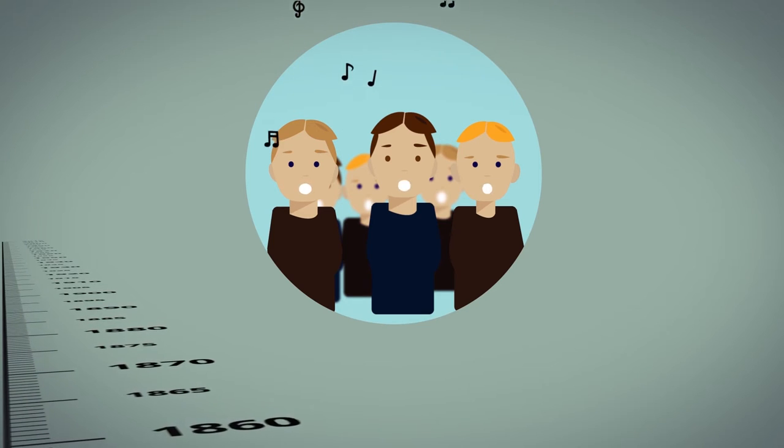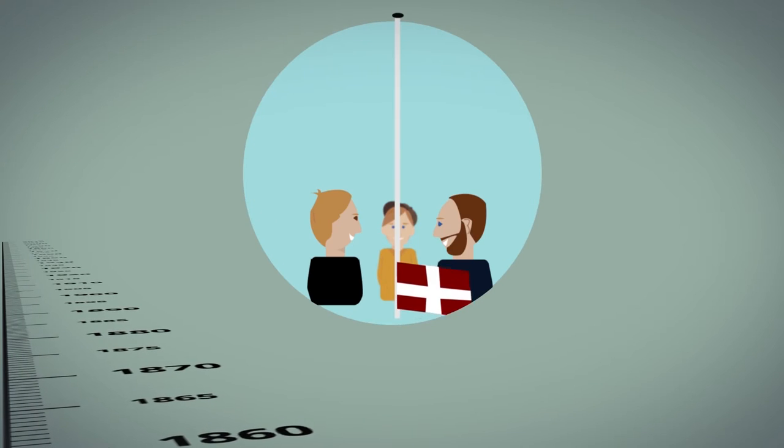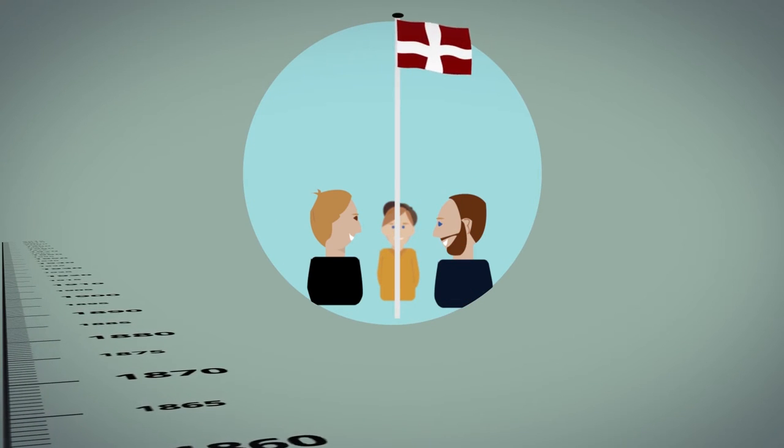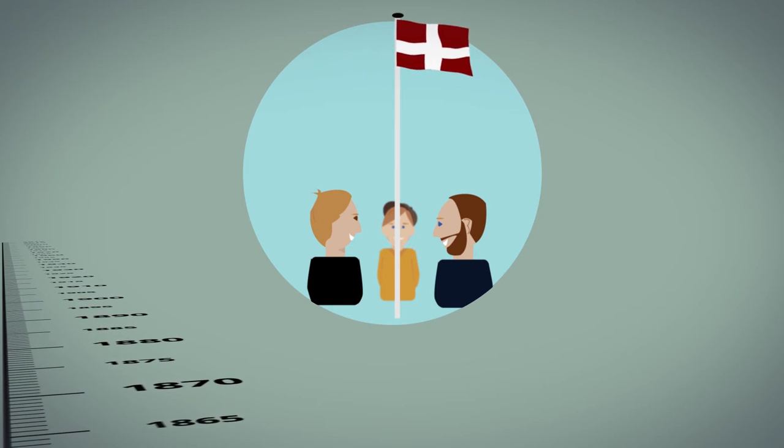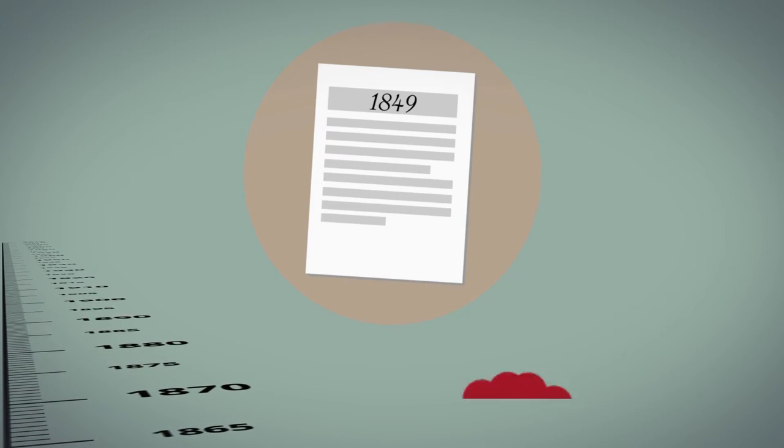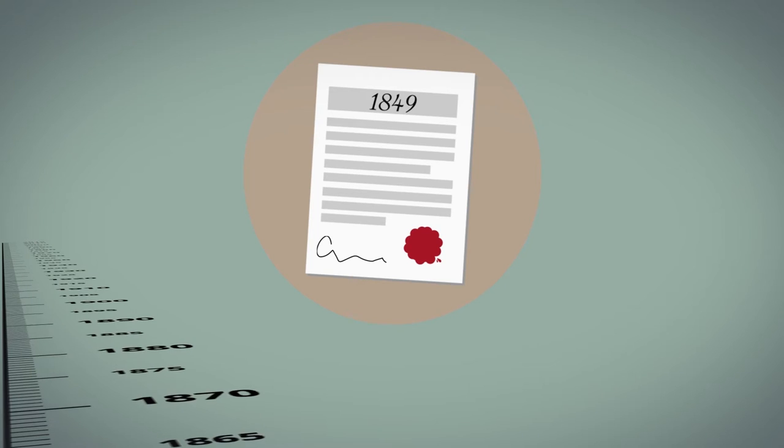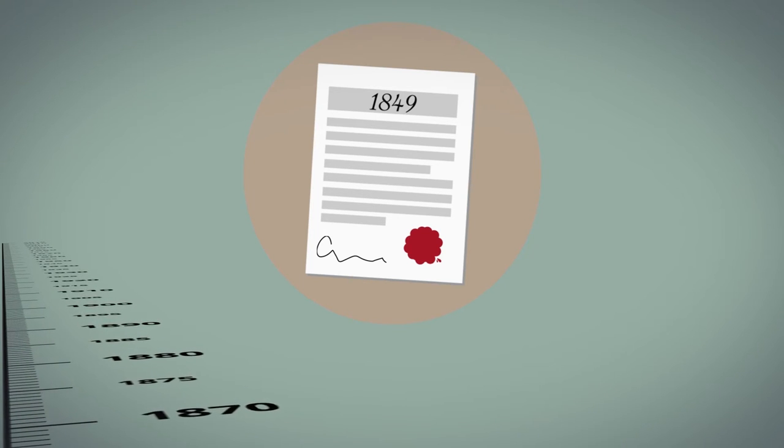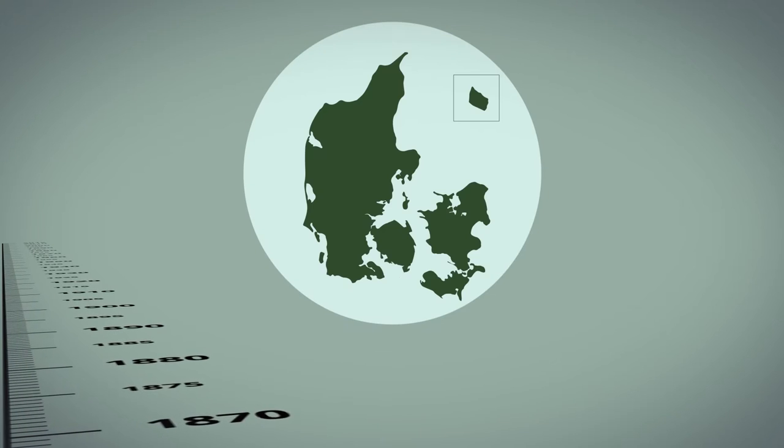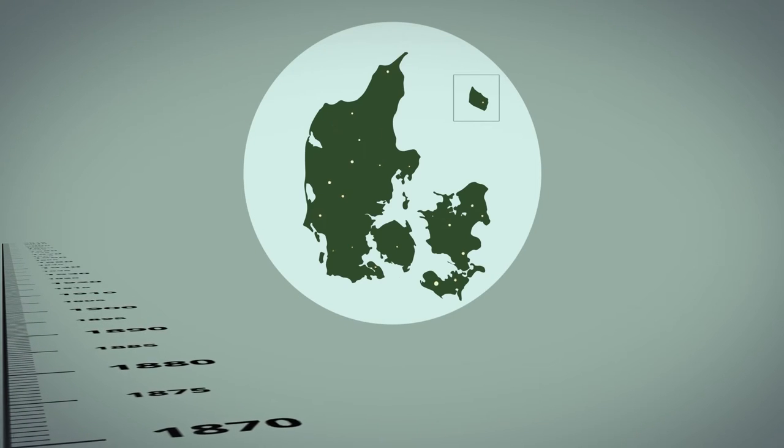The folk high school becomes a context of democratic and national education in which the young students are being prepared for participating in the new democracy, instituted by the Constitution of 1849, that remodeled the country from an absolute monarchy to a democracy.